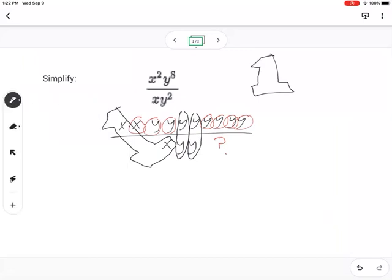So what's left on the top is x, y, y, we lost two of our y's, so there should be six, four, five, six, and the bottom is nothing.